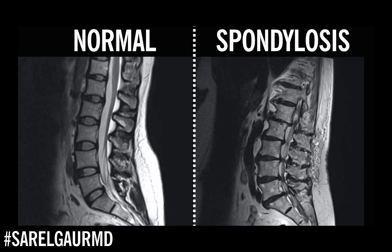Lastly, looking at these spinous processes, I can see they are very close to one another and have basically lost the internal space between them. Imagine this person trying to bend backwards — all these pieces of bone are going to get in the way of each other. We call this Baastrup's disease, but it's just part of this process of degenerative change of the spine, loss of mobility, and findings that correlate with pain.